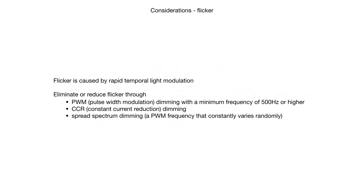Another issue often poorly addressed is that badly dimmed LEDs can flicker above but also below the human threshold of perception — you may not be able to see it, but it is there. In lighting, flicker is understood as a rapid monotonic fluctuation of brightness, like warning or strobe lights only much faster. Flicker, like glare, ranges from being irritating and fatiguing to posing a serious health risk, for example for people with migraine or epilepsy.